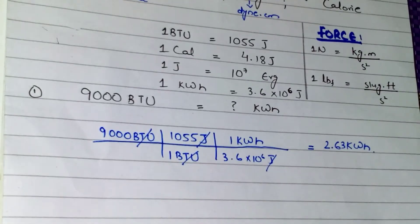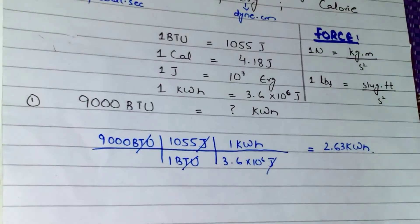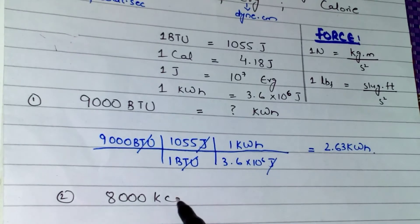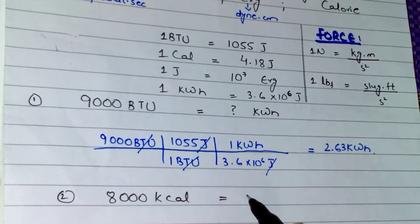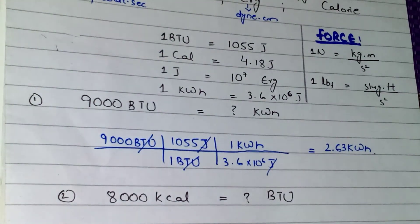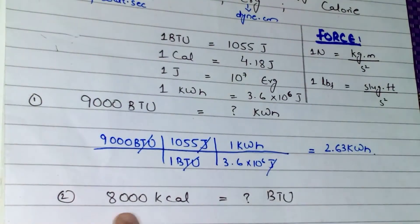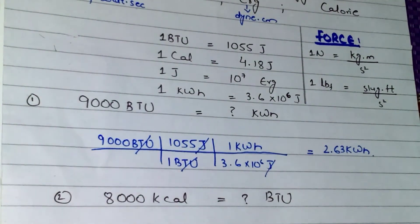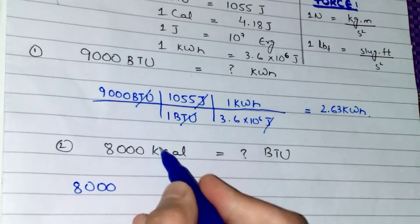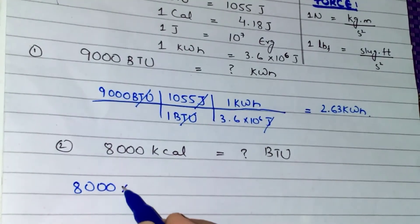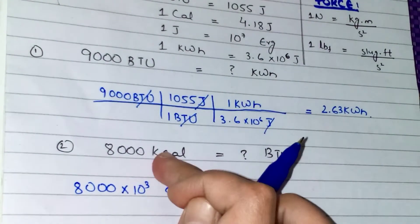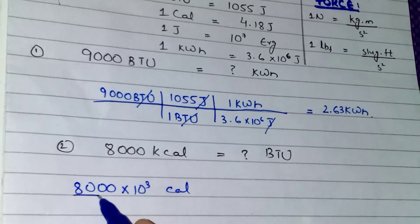The second question is: 8000 kilocalories equals how many BTU? We write it as 8000 × 10³ calories, since the prefix kilo means 10 to the power 3.